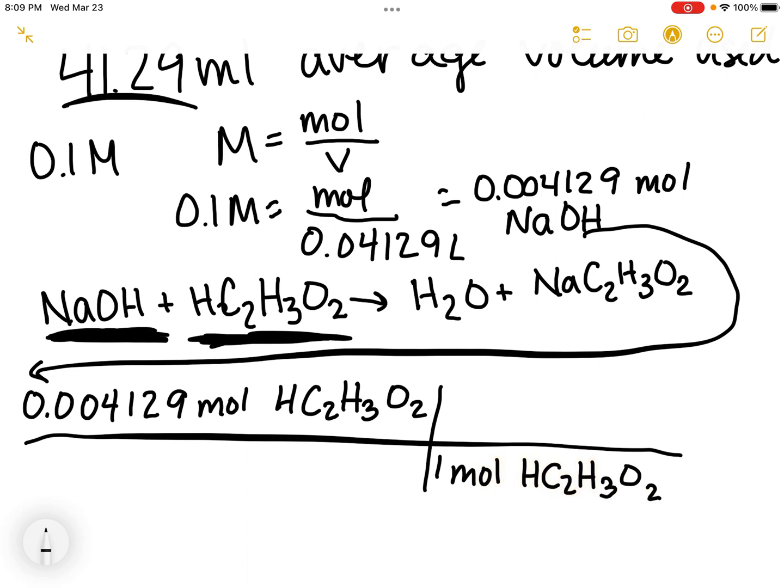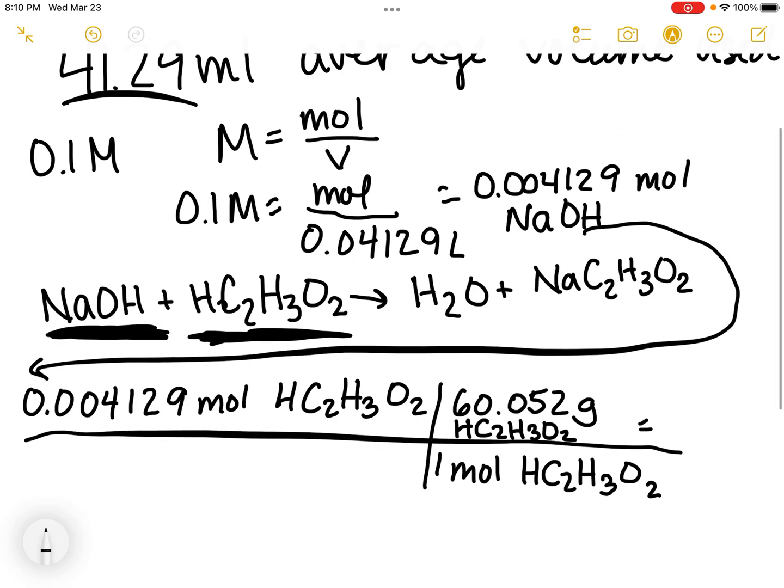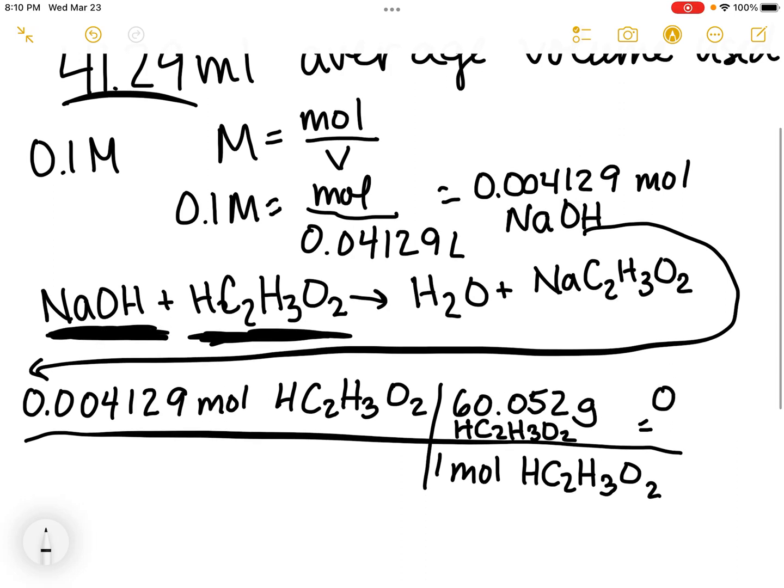In one mole of acetic acid HC2H3O2, there are 60.052 grams. Let's calculate: 0.004129 times 60.052, this gets me 0.2480 grams of acetic acid.